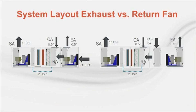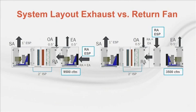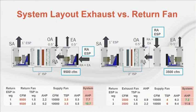Which system requires more air horsepower will vary based on the return static pressure. The two differences are that in the return fan system, the relief fan is penalized as it sees more airflow — 9,500 CFM versus 3,500 CFM in this example. The other difference is the exhaust fan system supply fan is penalized as it sees more static pressure. At low return static pressure of 1 inch, the air horsepower removed from the supply fan by the return fan is less than the air horsepower added to the return fan. So the system requires more air horsepower from the fans to use a return fan.